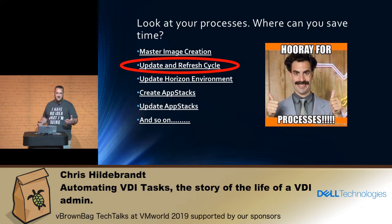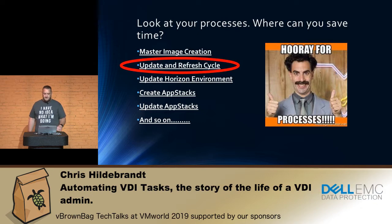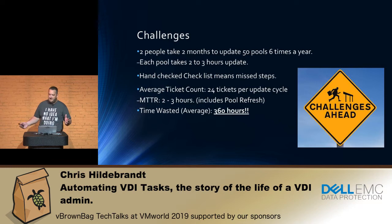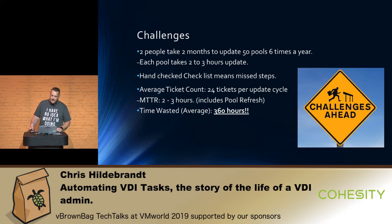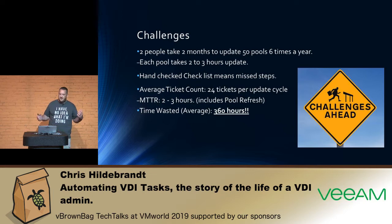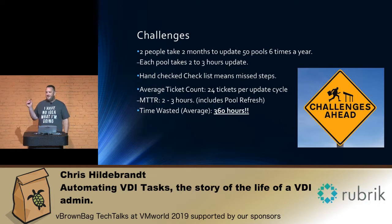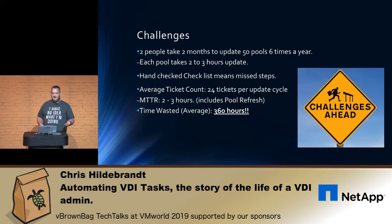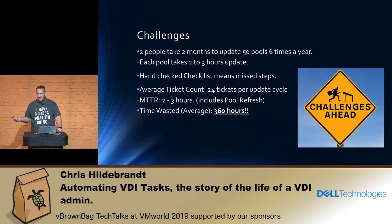The first one we chose to tackle was the update and refresh cycle. Looking at it realistically, it takes two people two months to update 50 pools six times a year — on top of your daily work. It's a hand-checked list. You occasionally run into missteps. You have your little checkbox saying you updated Java on this image, but you think you did so you just check it, and then you deploy and find out you missed the update on Java and now you've got a ticket. You go back, re-image, refresh — you're wasting more time.